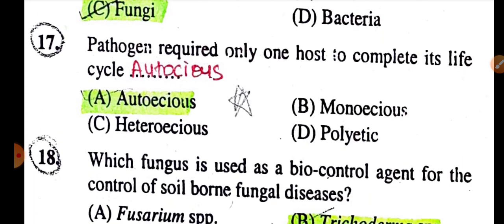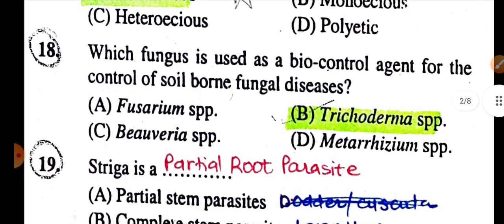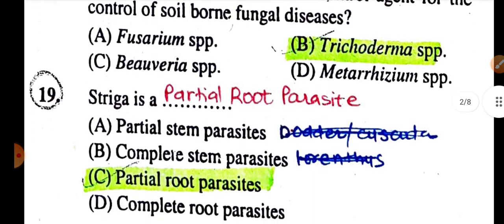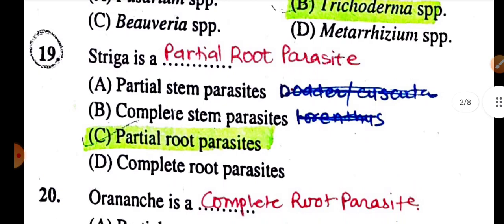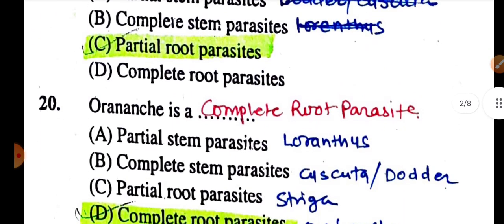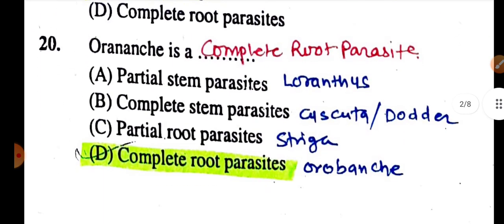A pathogen that requires only one host to complete its cycle is called autoecious. Which fungus is used as a biocontrol agent for the control of soil-borne fungal diseases? Answer: Trichoderma species. Striga is a partial root parasite. Orobanche is a complete root parasite.